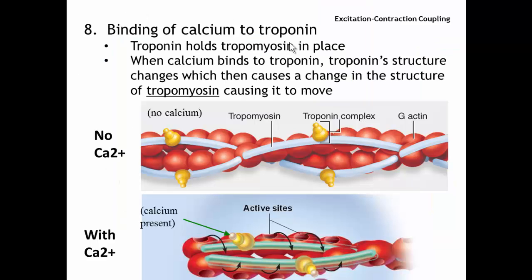Step number eight is the binding of calcium to troponin. Troponin is the thing that looks like a yellow Kong toy in this picture — it is part of the thin filament. The three proteins of the thin filament are actin, troponin, and tropomyosin. When the calcium leaves the SR and goes into the cytoplasm, it binds to troponin. Normally, troponin's job is to hold tropomyosin on top of active sites on actin. But when calcium comes in and binds to troponin, the troponin moves just a little bit, pulling the tropomyosin with it. The tropomyosin now moves off of the active sites on actin, and the active sites are revealed.